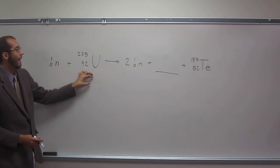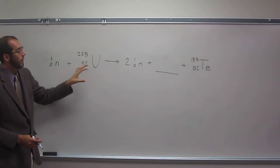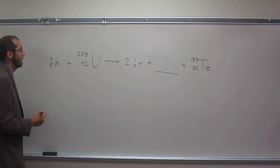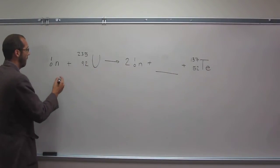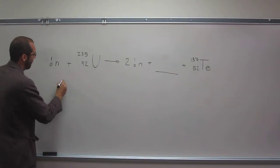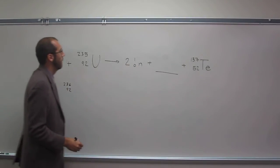So again, we're going to have to add up both sides to get the same masses and same number of protons. So on this side, of course, we've got 236 mass total and 92 proton total.